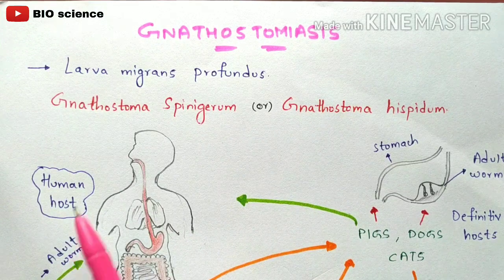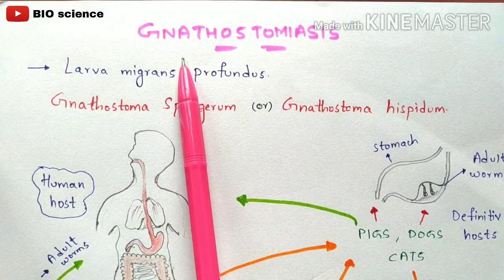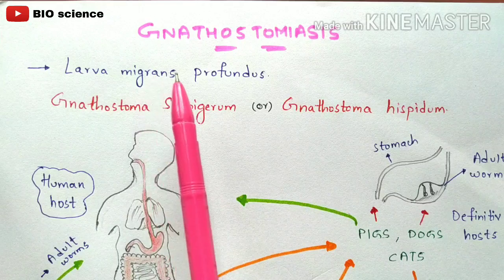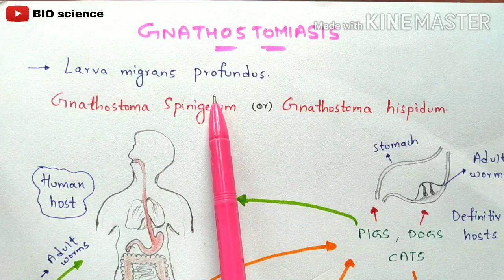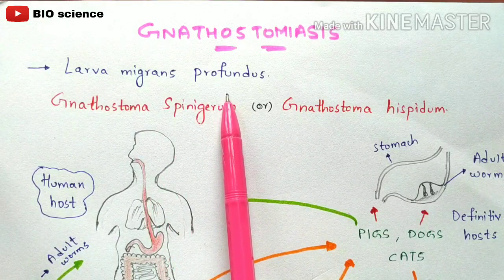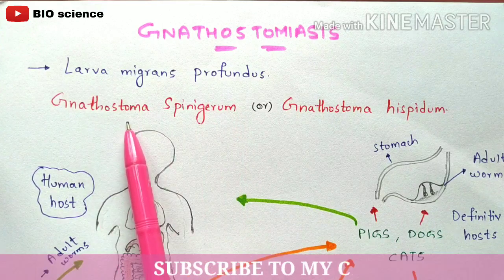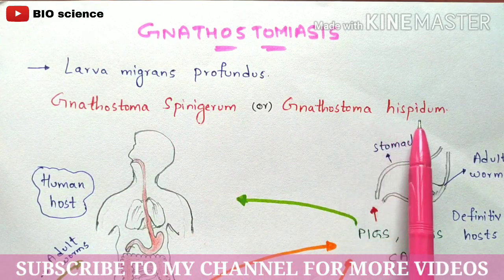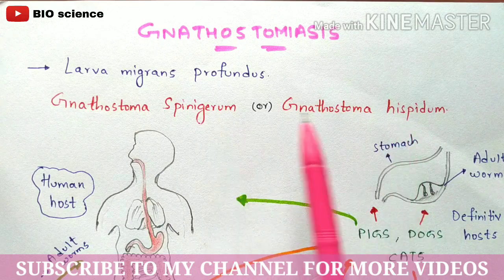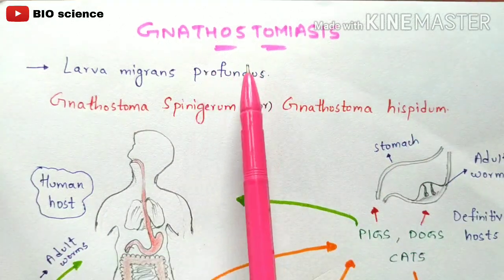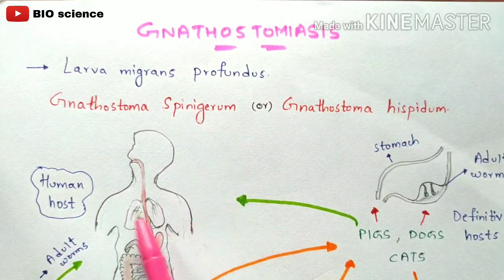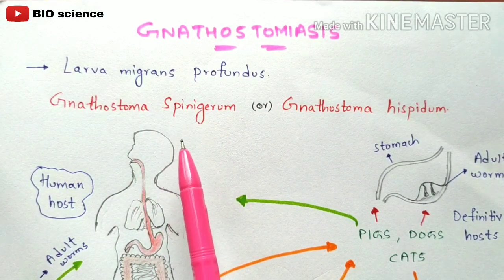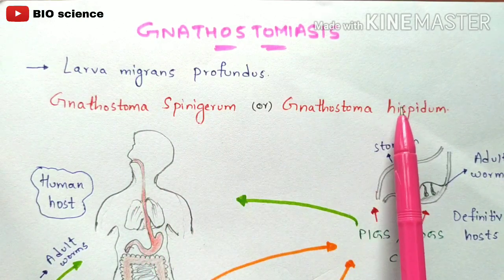In this video we are going to discuss about Gnathostomiasis, which is also called Larva migrans profundus. It is mainly caused by two different types of parasites: Gnathostoma spinigerum and Gnathostoma hispidum. Either of these will cause Gnathostomiasis. I am going to explain the life cycle of Gnathostoma spinigerum, as the life cycle will be the same for Gnathostoma hispidum also.